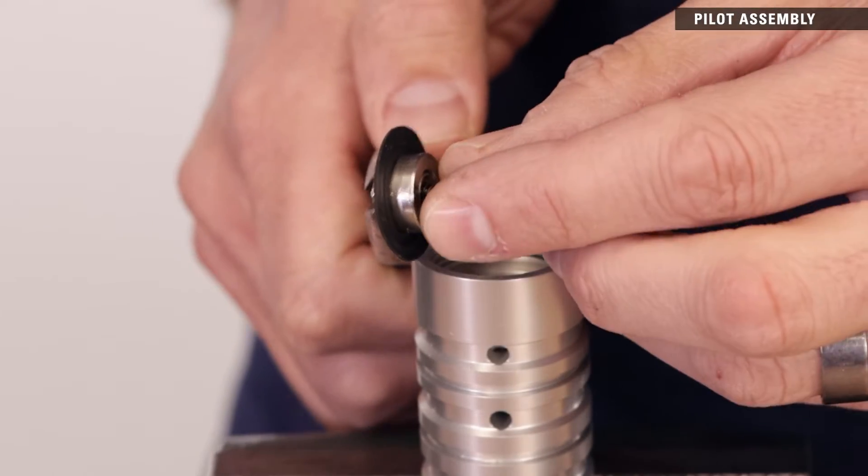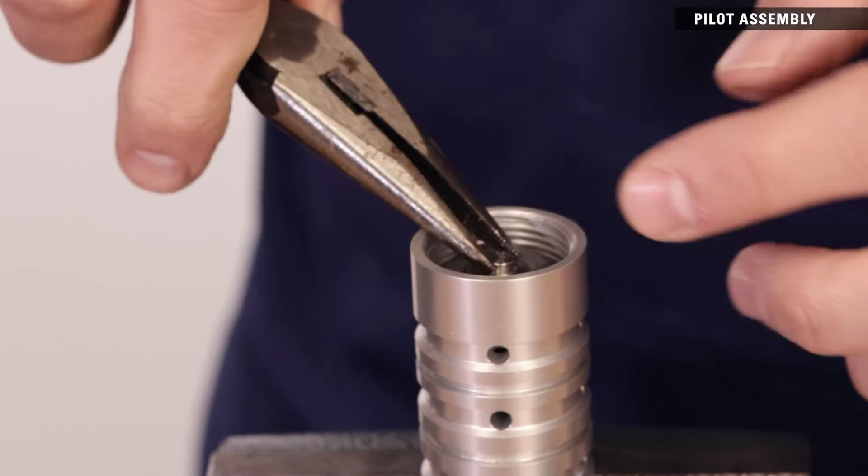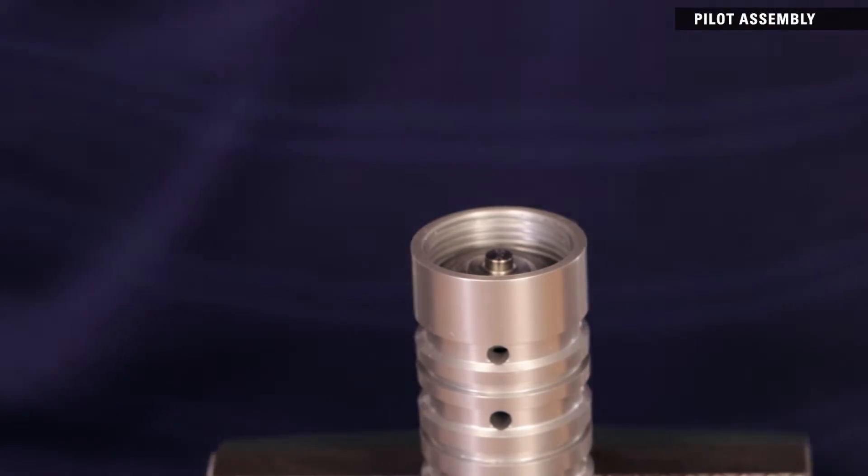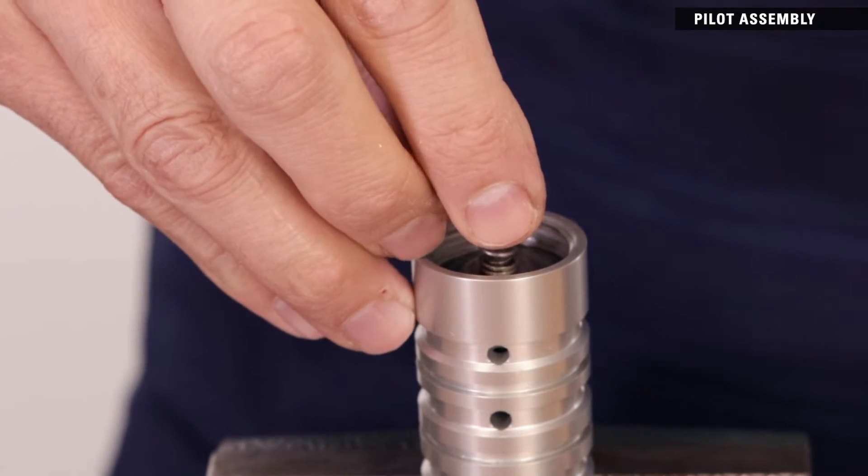Place the small end of the conical spring onto the upper diaphragm assembly. Use needle nose pliers to insert the assembly straight into the cartridge. Place the booster spring on top of the diaphragm assembly.